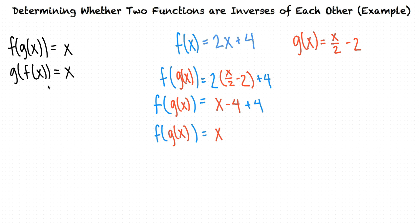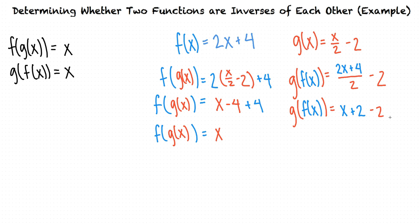Now we can find the composition g of f of x by substituting 2x plus 4 into x for the g of x function. This fraction can be simplified, and we're left with x plus 2 minus 2. 2 minus 2 is 0, so our final composition is g of f of x equals x. Again, we see that both the composition f of g of x and g of f of x equal x because the two functions are inverses and they undo each other.